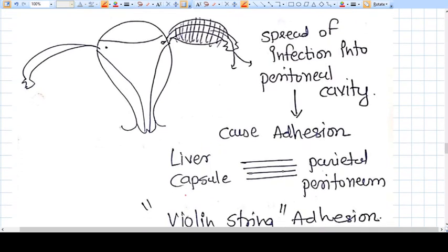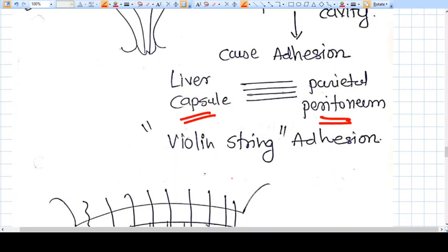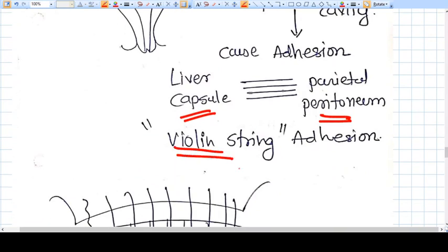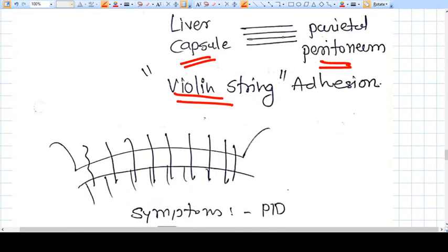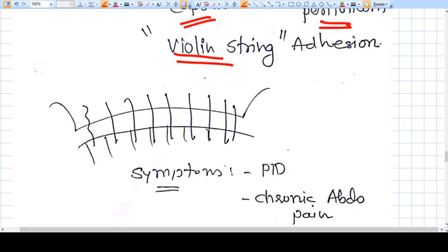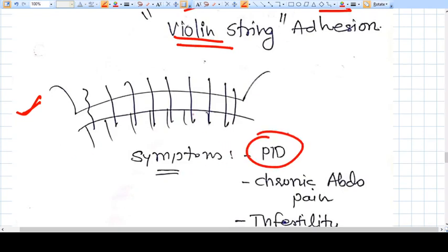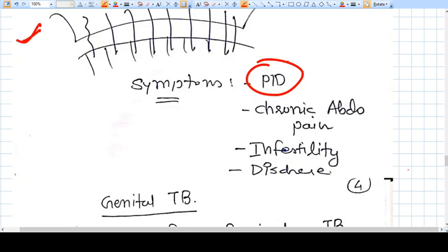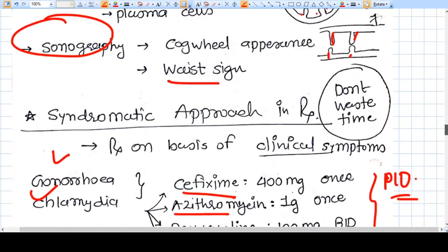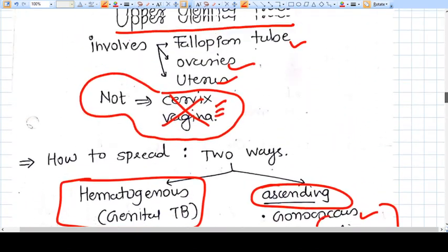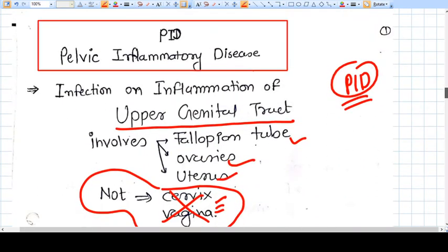You will see the violin string adhesion. Remember the name—it is asked in exams. This is a sequela of PID. The patient will have chronic abdominal pain, infertility, and discharge. This is how we see PID. Thank you.